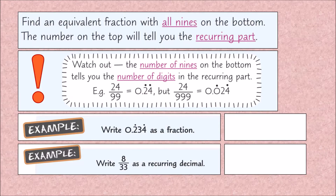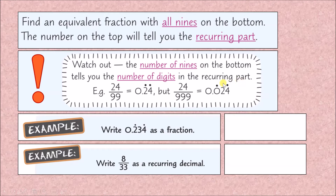Here's a quick guideline. Find an equivalent fraction with all nines on the bottom — the number on top tells you the recurring part. For example, with 24 over 99, count the nines: two nines means the recurring number is two digits long. Three nines means you're recurring between three numbers.